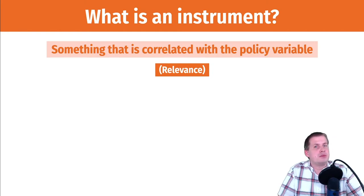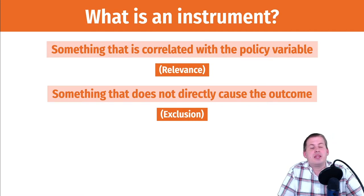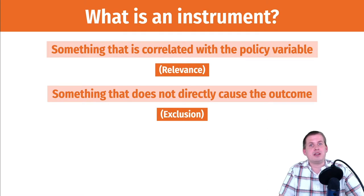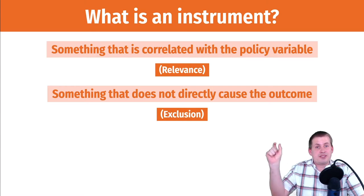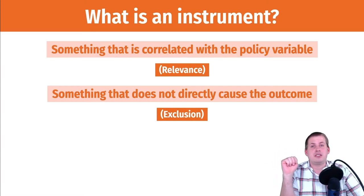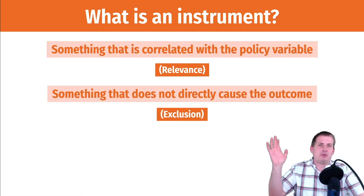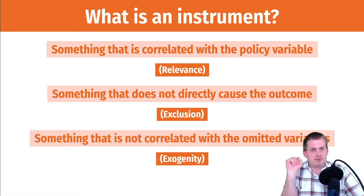An instrument is something that causes the policy. It is something that does not directly cause the outcome — it only causes the outcome through the policy. So if we consider required schooling laws as an instrument that causes education, we have to say that it does not cause additional earnings. There's no plausible connection between mandatory schooling laws and wages — maybe there is, maybe there isn't — but we have to be able to prove there's no connection between the two.